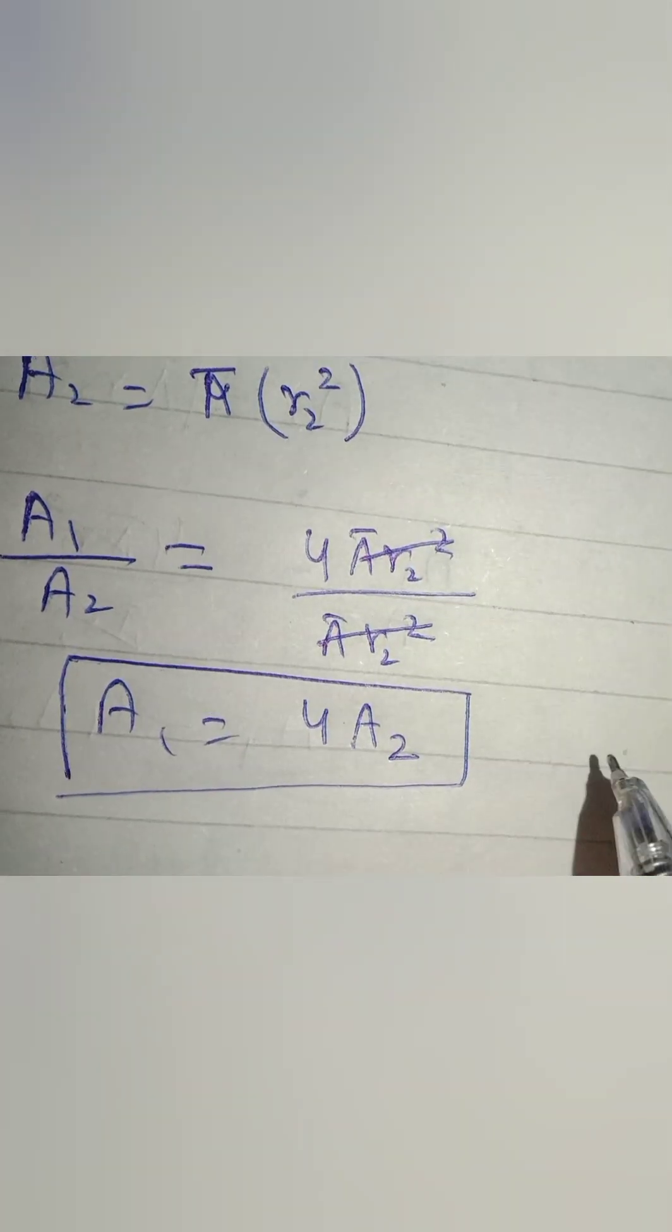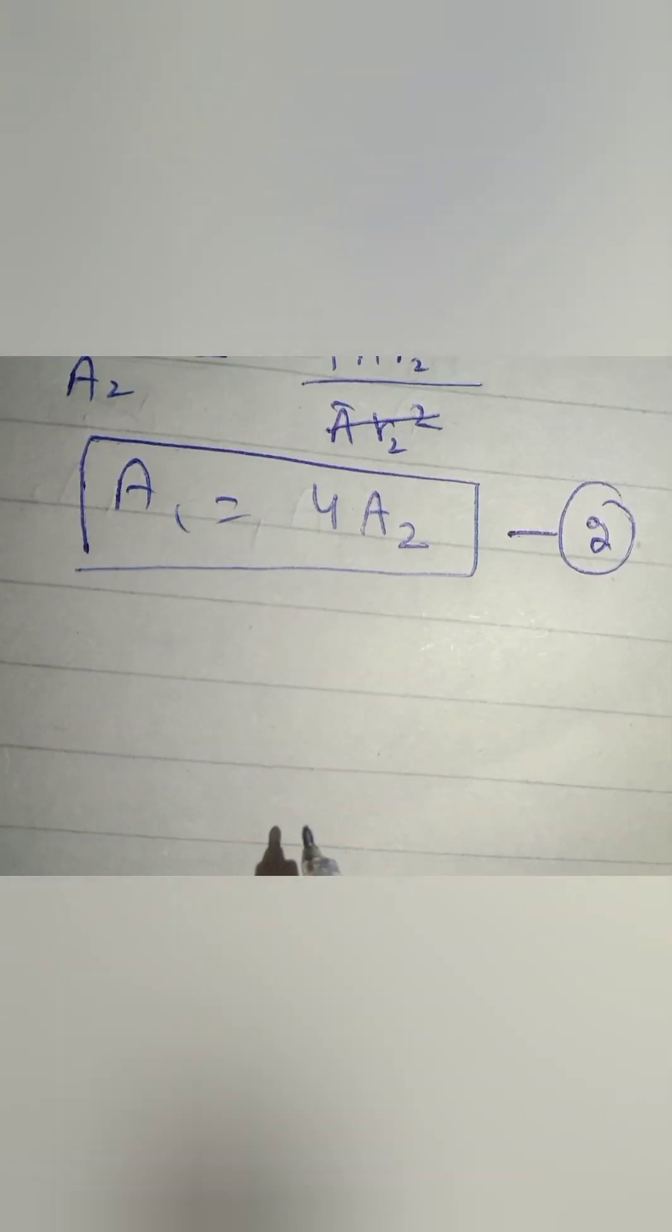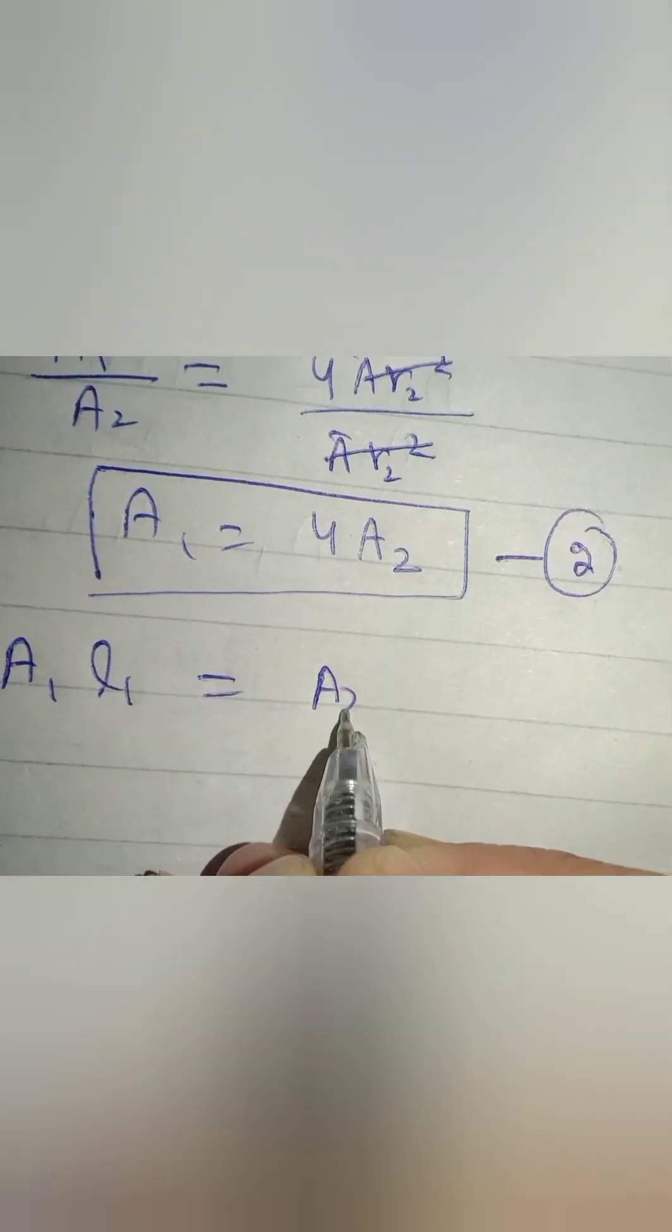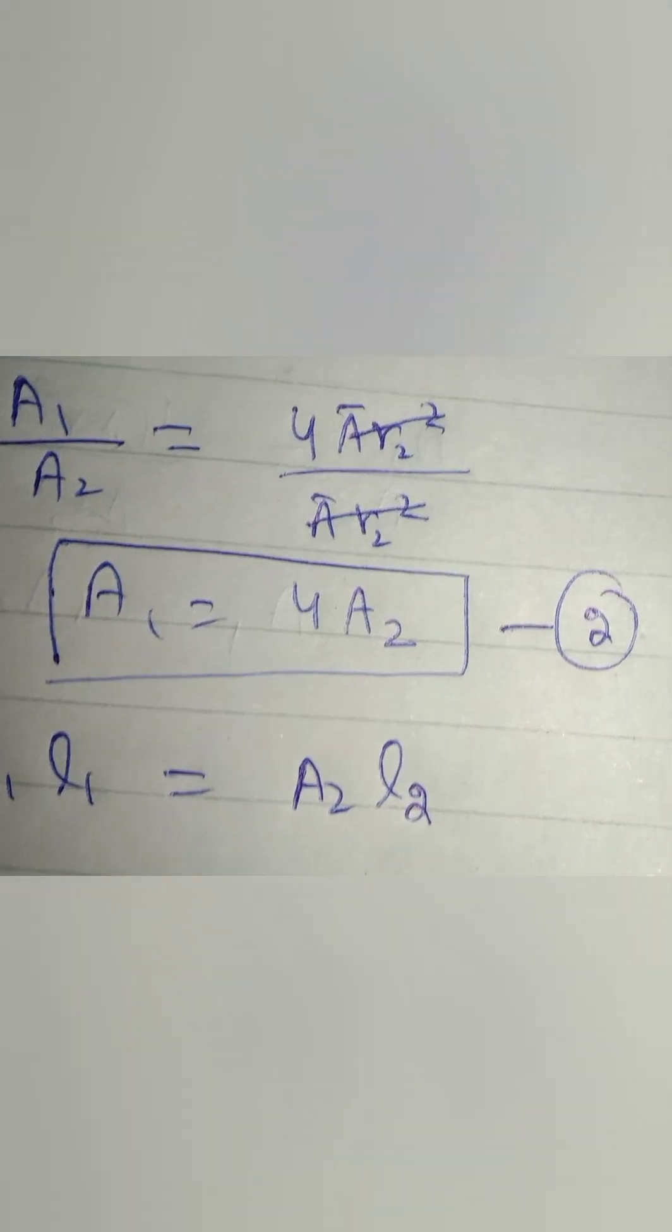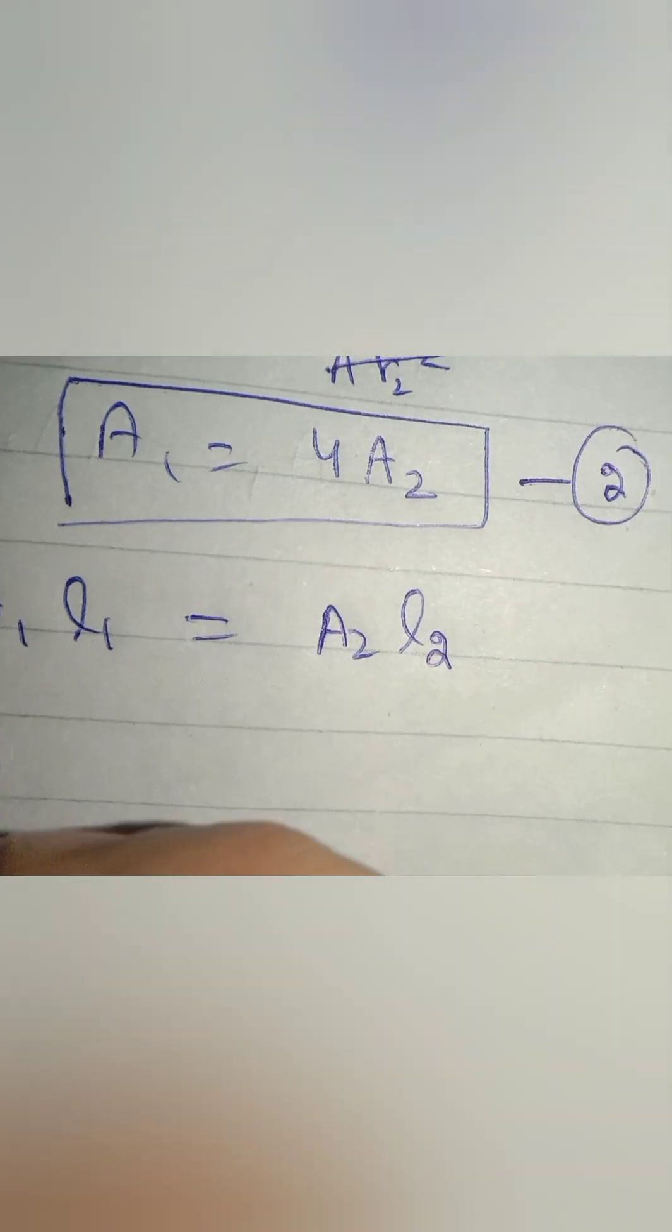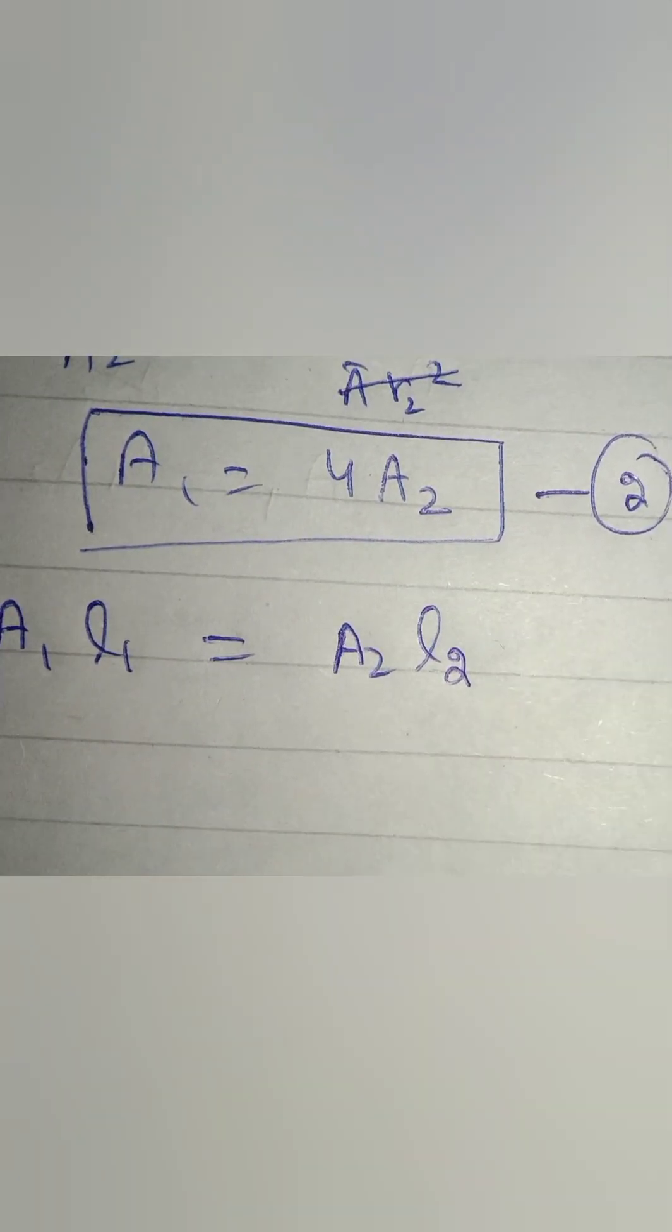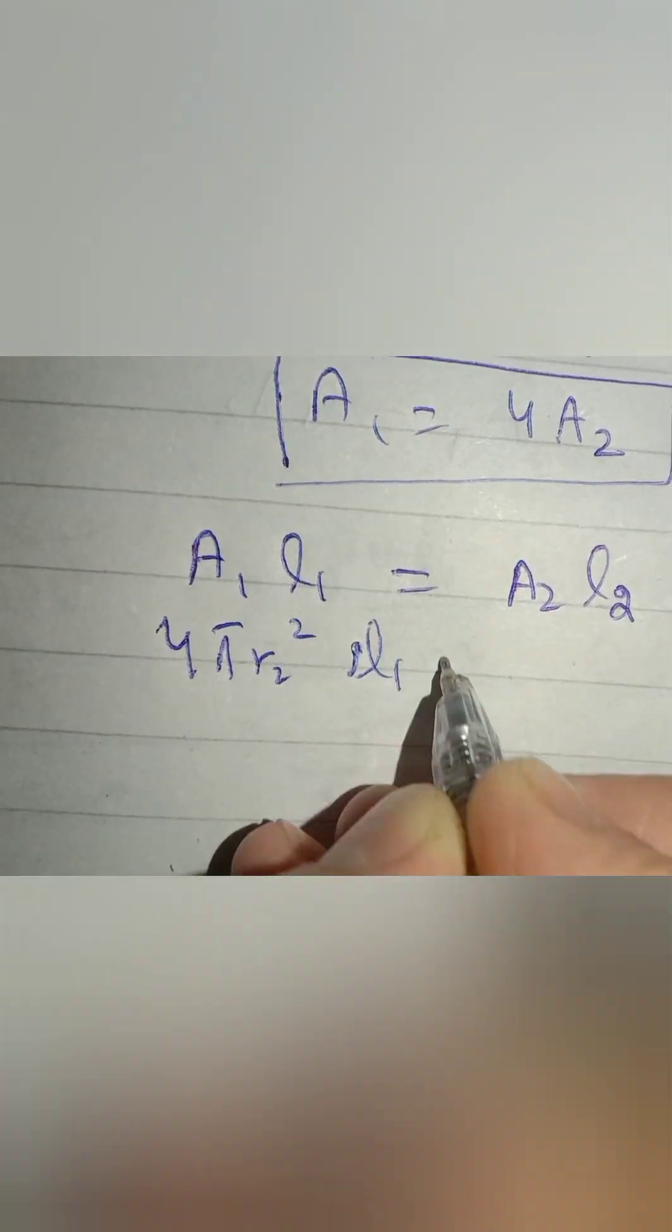Although by stretching, the area and length of the wire will change, but its volume will remain constant. So we can say A1 L1 equals A2 L2, meaning volume original is equal to volume after stretch. Just put in the values of A1 and A2 we calculated earlier and we will obtain the ratio of L1 and L2. A1 is 4π r2 squared and A2 equals π r2 squared.